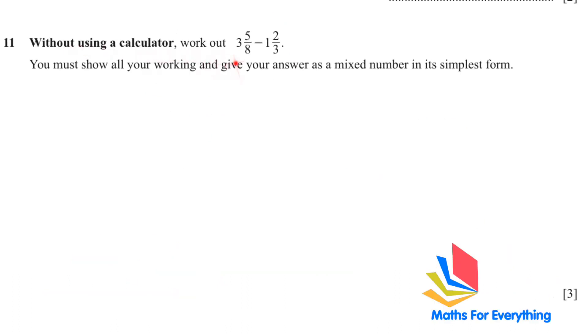Question number 11. Without using a calculator, work out this fraction and write your answer as a mixed number in its simplest form. It's a 3-mark question. This is one of the most repeated questions and very easy to solve. So the first thing is we'll convert this mixed fraction into an improper fraction. For doing that we have to multiply the divisor by the quotient. So 8 multiplied by 3 plus 5, that will give us 29 over 8. The same you are going to do for the other fraction. 1 multiplied by 3 plus 2, and you will get negative 5 over 3.